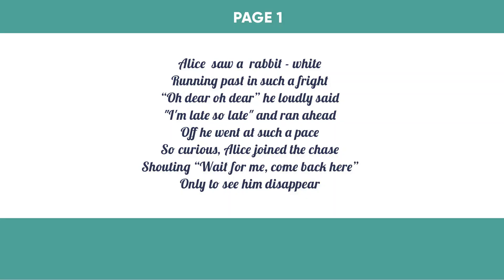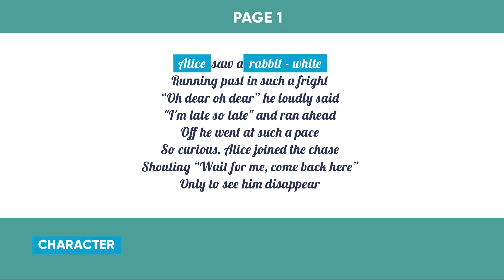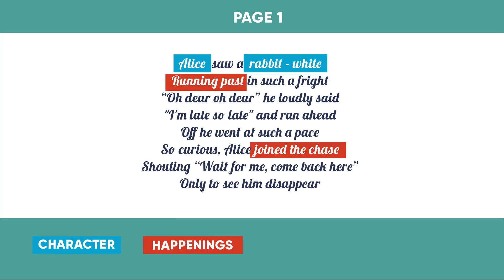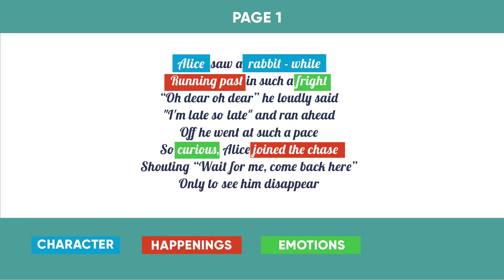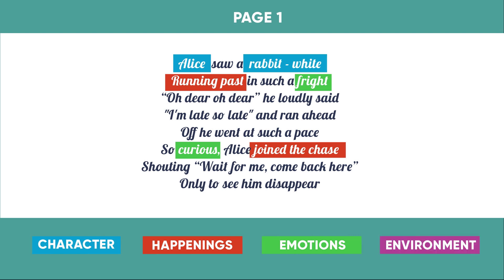Here I have the first page of the book written out. To break it down into illustration, I would highlight all the characters — so Alice and the white rabbit — happenings, which are the rabbit running past and Alice joining the chase, emotions, which are the rabbit in a fright because he's late and curious Alice, and finally the environment.